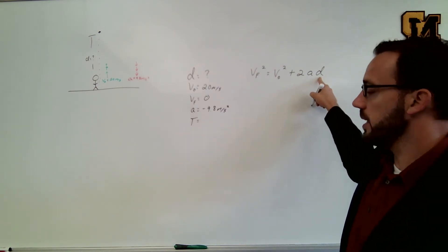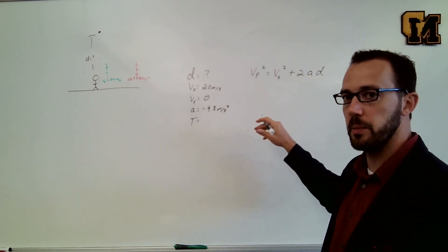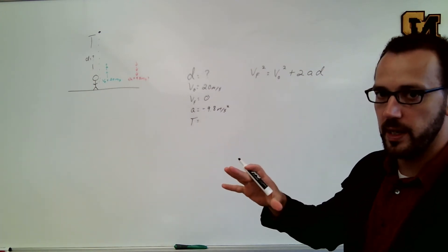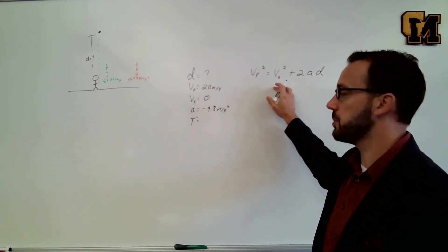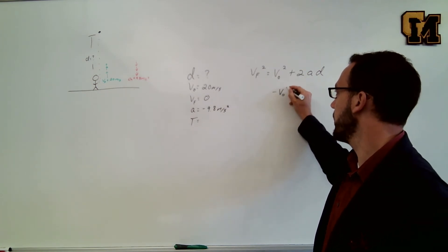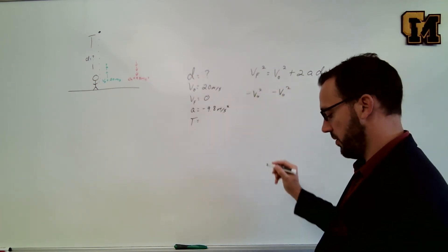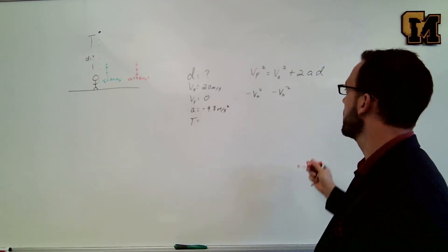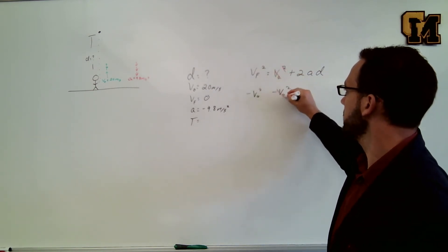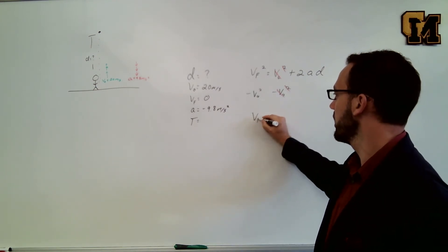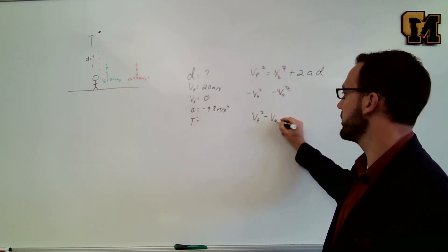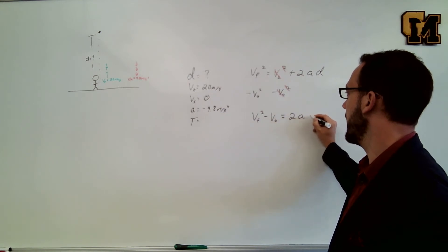We're solving for D so we're going to have to rearrange this equation a little bit. We do that please excuse my dear Aunt Sally backwards. So we're going to get rid of the addition first, we're going to have to subtract V naught squared to the other side of our equation. That means on the right side V naught squared cancels leaving me with VF squared minus V naught squared equals 2AD.